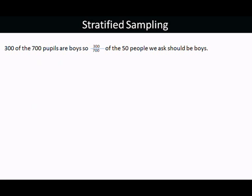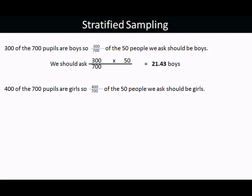300 of the 700 are boys, so 300/700 of our 50 people should be boys, and that comes to 21.43. Similarly with the girls, 400/700 of our 50 people should be girls, and that comes to 28.57.